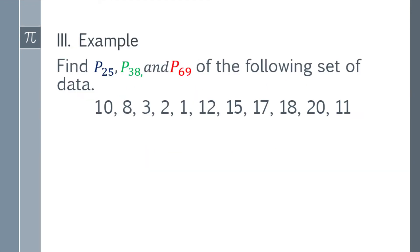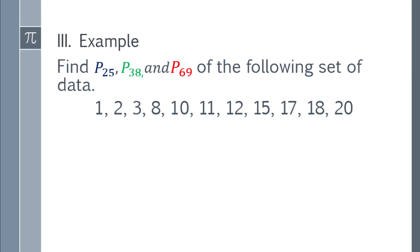Let's start with the first example. Find P sub 25, or percentile 25, P 38, and P 69 of the following set of data: 10, 8, 3, 2, 1, 12, 15, 17, 18, 20, and 11. We have 11 numbers. The first thing you will do is you have to arrange it into ascending order.